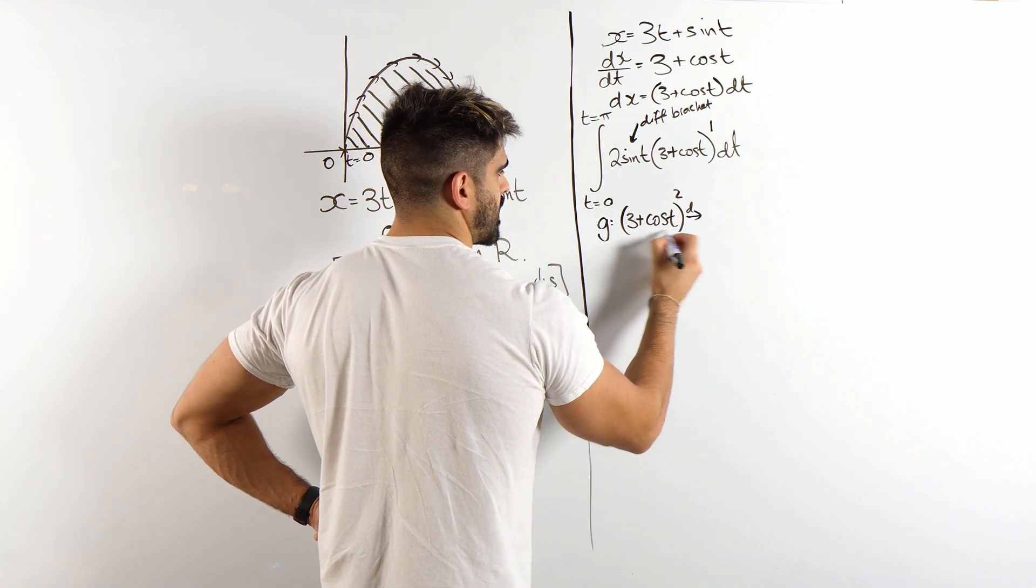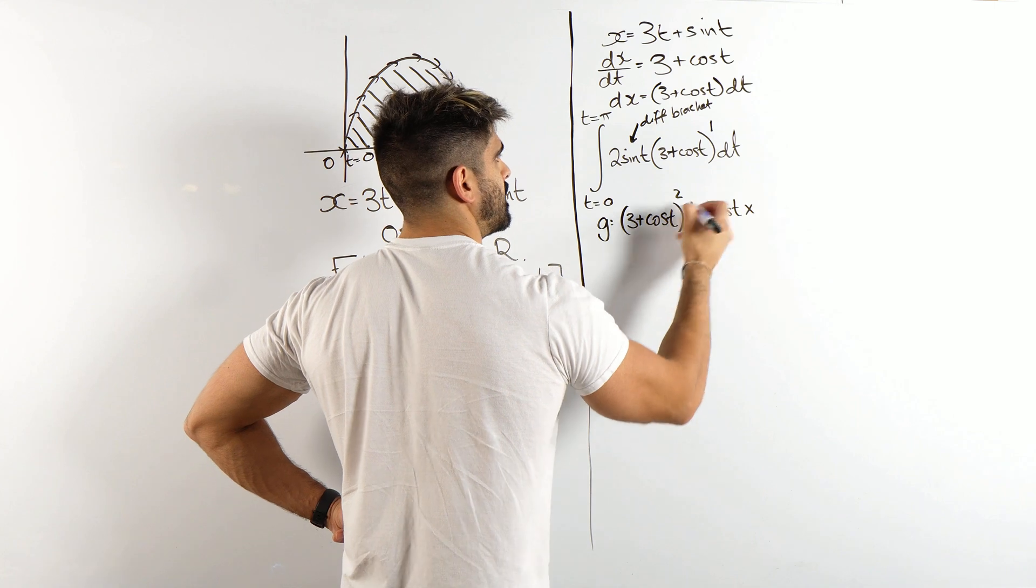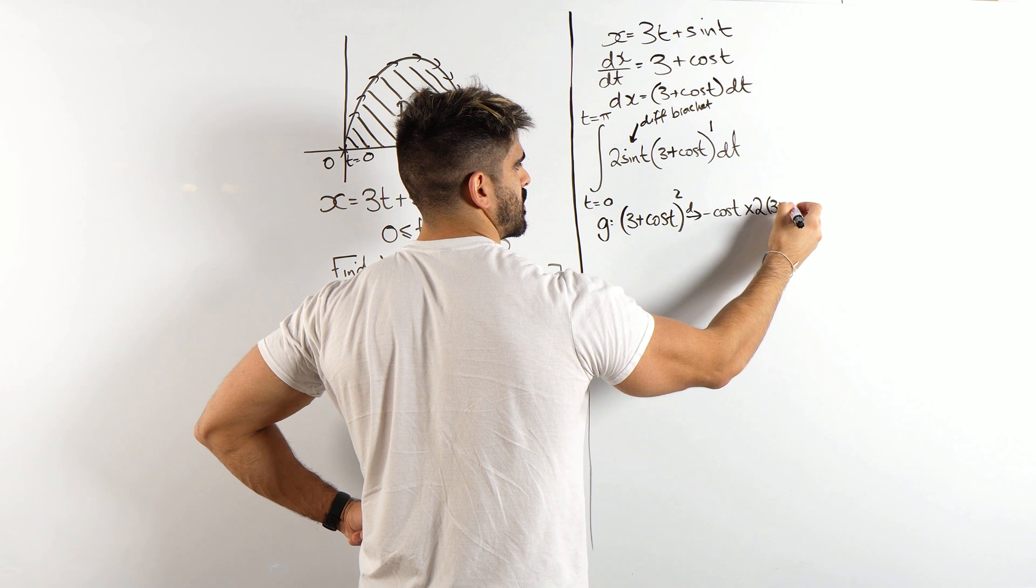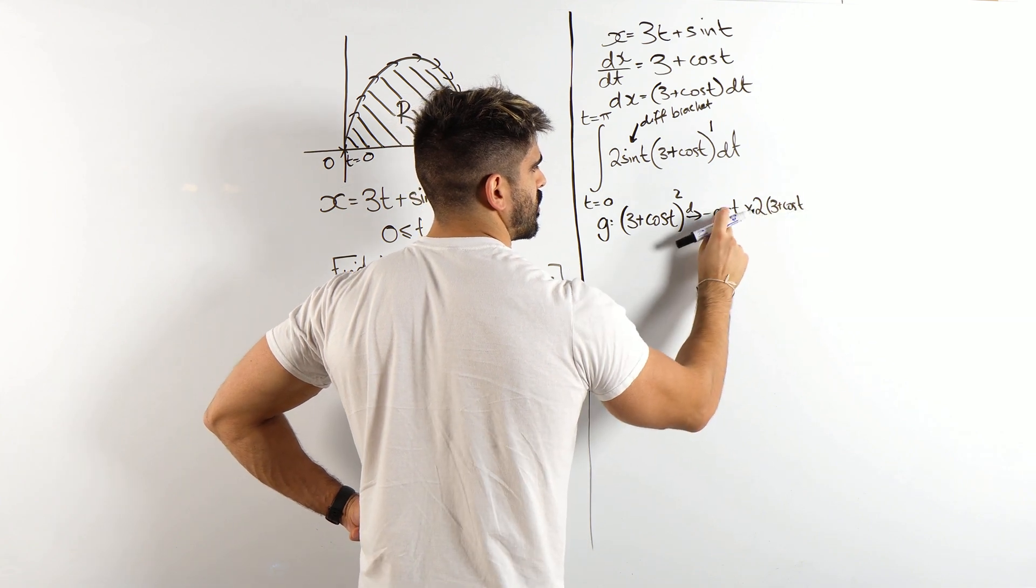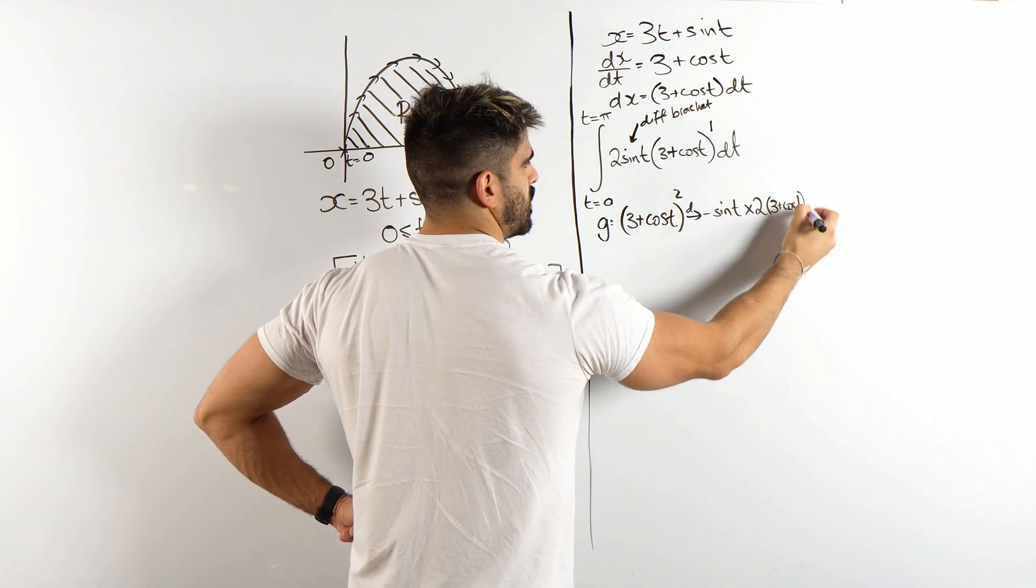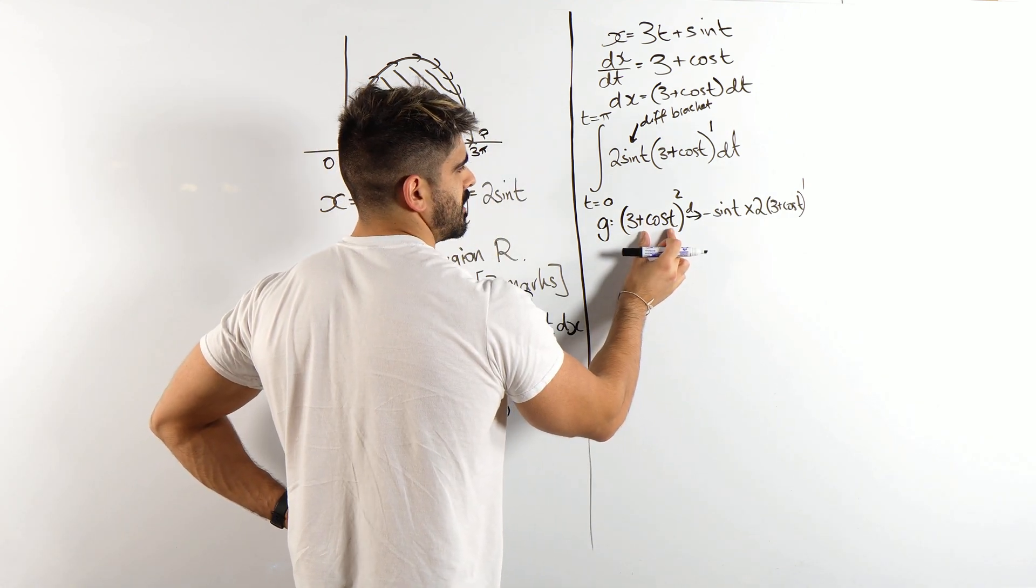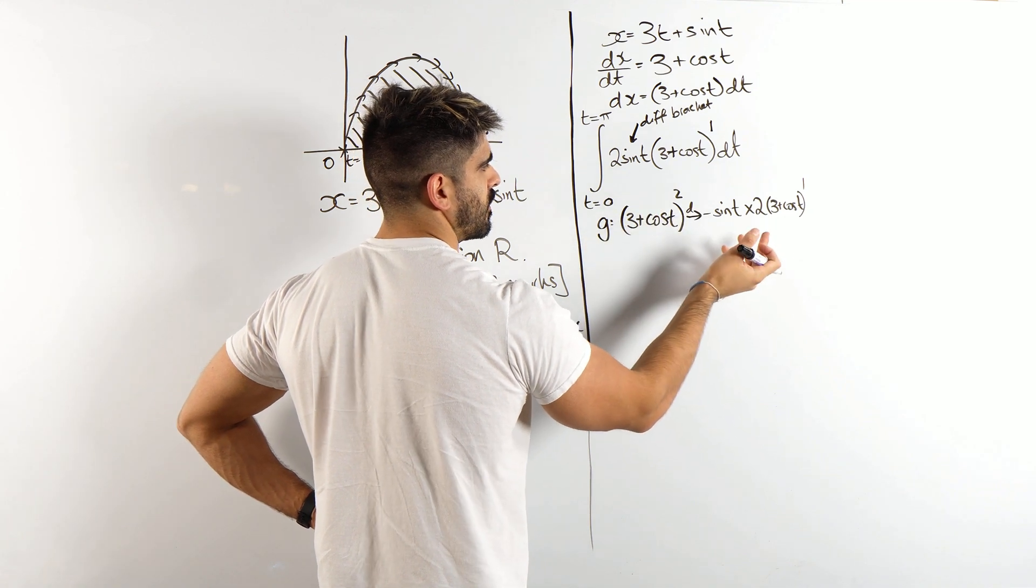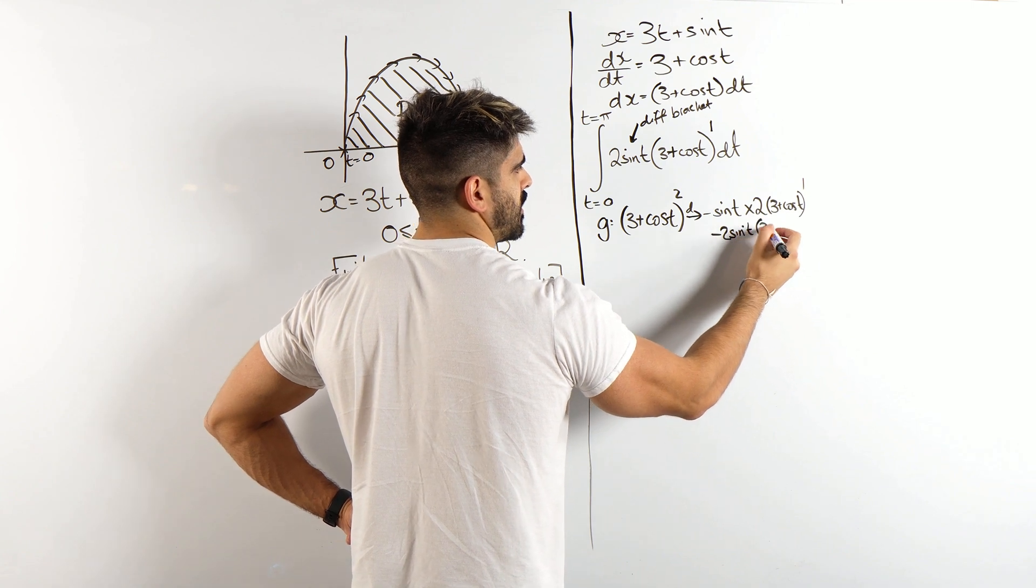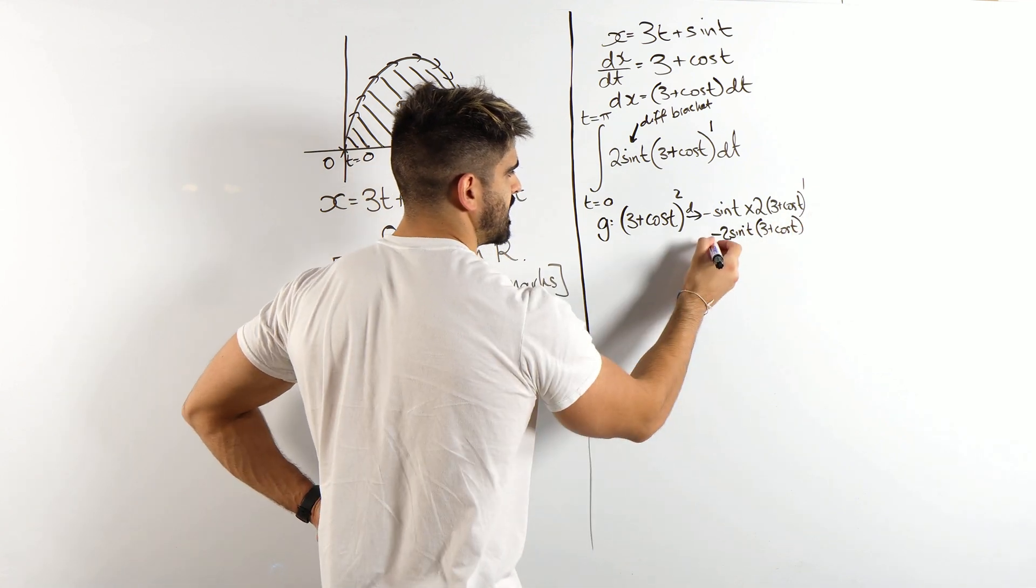And then you differentiate it to check. So we differentiate what's inside the bracket first, that becomes minus cos t, times, bring down the power, 2, then we knock one off the power, 3 plus cos t, and I don't know why I've written cos t, cos t differentiates to minus sine t, my bad, and then we knock one off the power. So you differentiate what's inside here, then you bring down the power, knock one off the power. So what does that give you? This is minus 2 sine t, then we have 3 plus cos t to the power of 1. So that means this integrates to this.